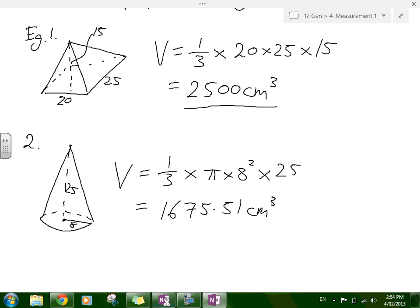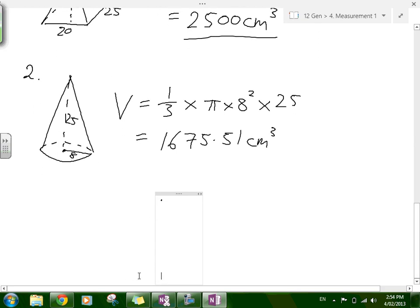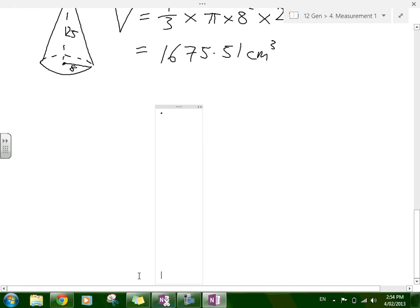And the final thing is the sphere. Does anyone know what the volume of a sphere is? It's 4 over 3 π r cubed. Obviously, if it's a hemisphere, if it's half a sphere, then it's 2 over 3 π r cubed.